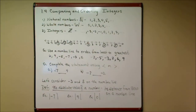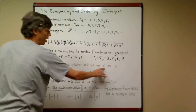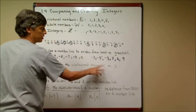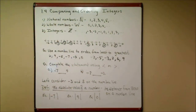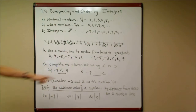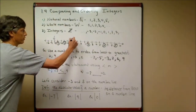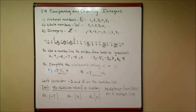Now I'm going to compare two integers using the less than or greater than sign. A memory trick: the less than sign looks a little like a capital letter L tipped slightly, and L stands for less than. For negative seven and positive four — any positive number is bigger than any negative number, so negative seven is less than four. When comparing two negatives, the bigger the number appears to be, the smaller it actually is. Negative eight is to the left of negative two, so negative eight is less than negative two.